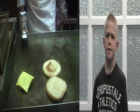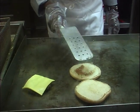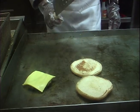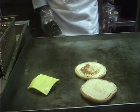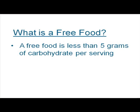So what foods do I have to count, and which ones have carbohydrates? Some foods contain carbohydrates, while other foods are called free because they contain little or no carbohydrate. A free food has less than 5 grams of carbohydrate per serving.